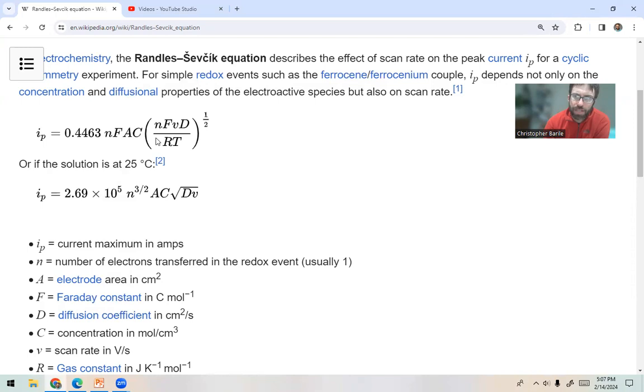Anytime in electrochemistry or most times in electrochemistry, when you see this square root term, this is telling you it has something to do with diffusion. And this comes from Fick's law of diffusion where you do this derivation and you end up getting this square root.